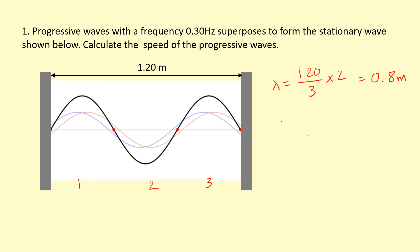So now the frequency is given, 0.30 hertz. So I can just use the wave speed equation, frequency times wavelength, and that gives me 0.8 times 0.3, 0.24 meters per second.